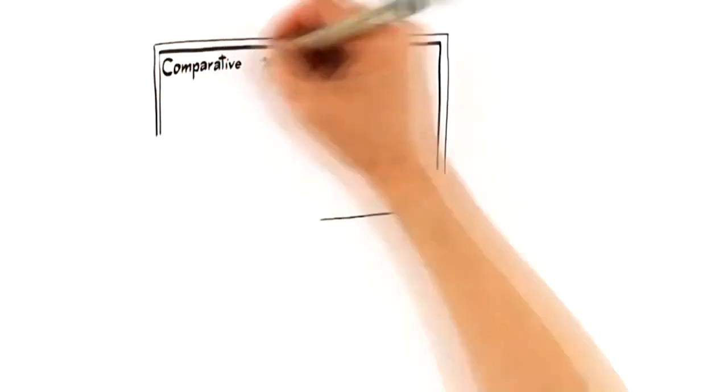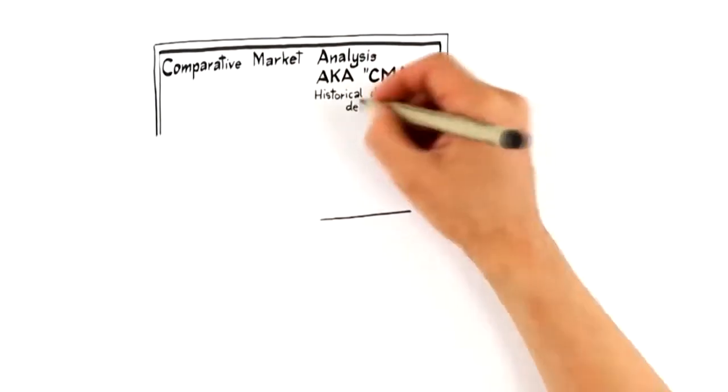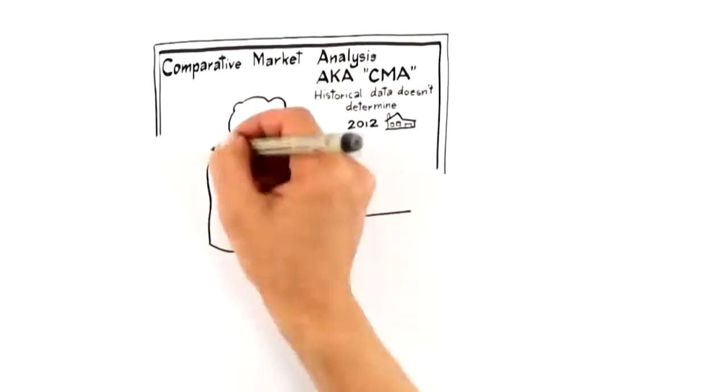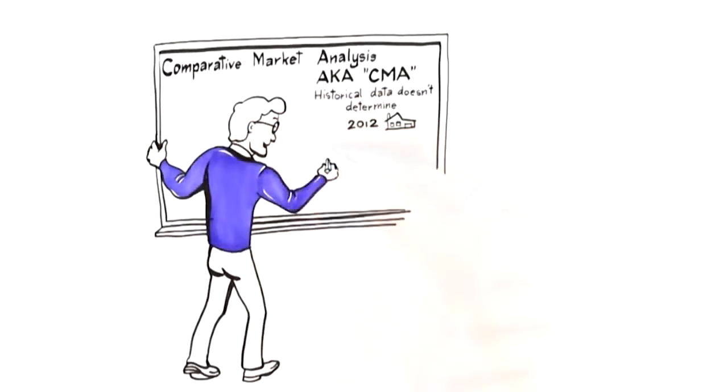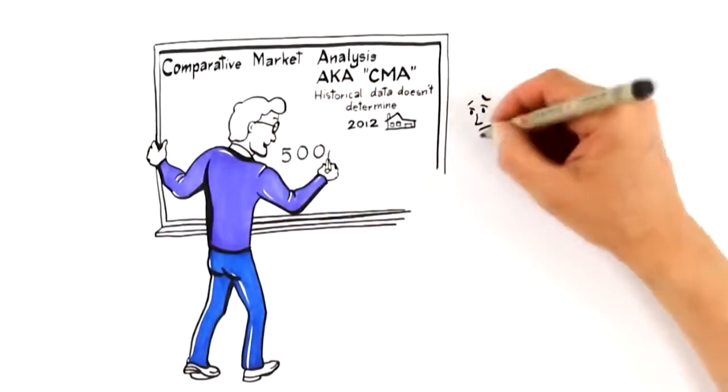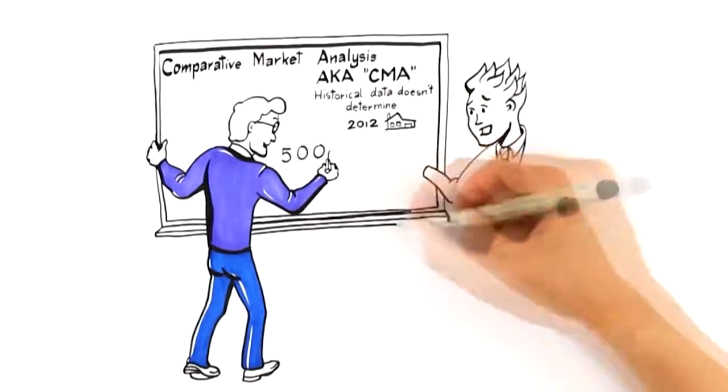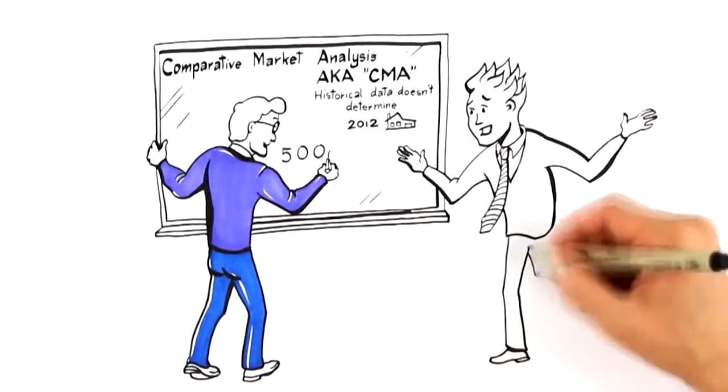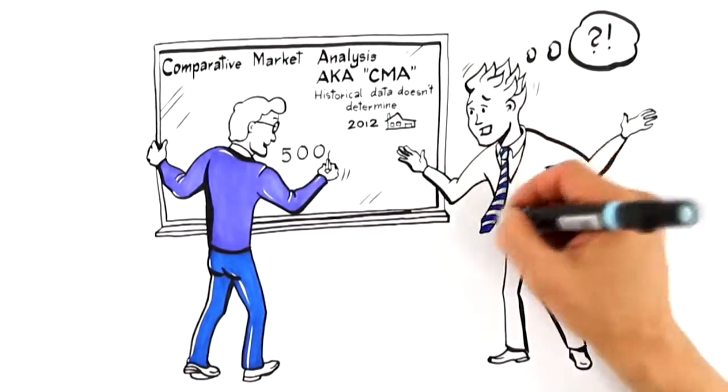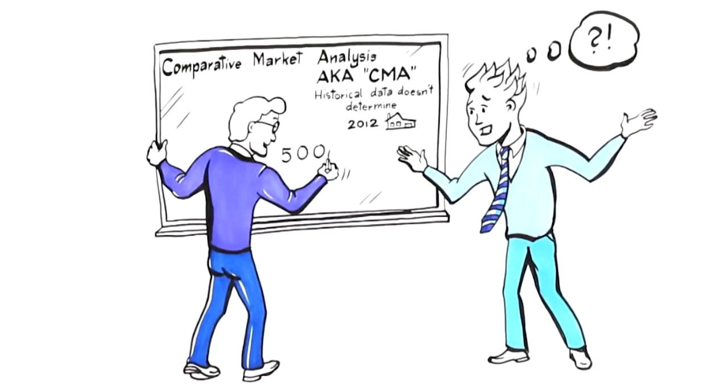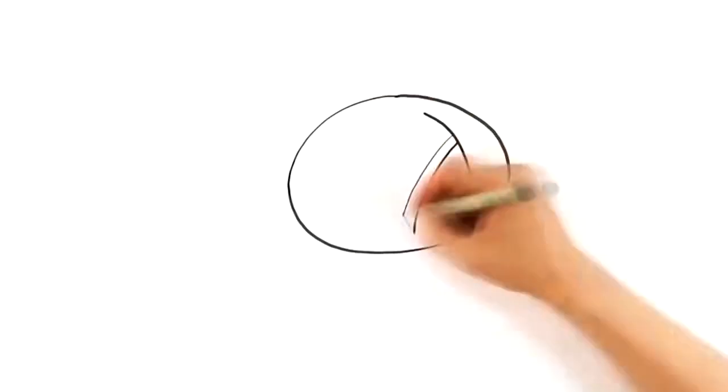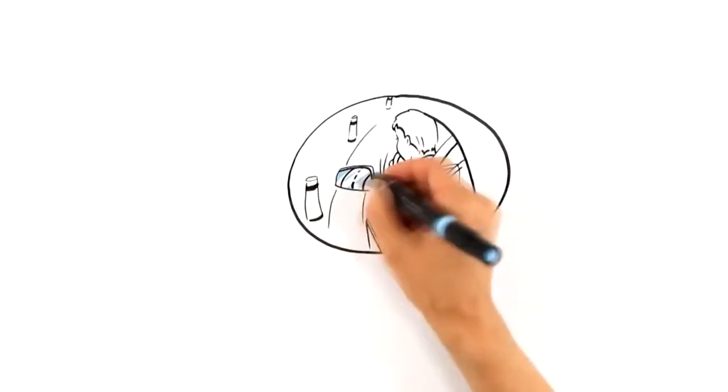Let's start with number one, pricing expertise. Traditionally, agents price homes using what is called a comparative market analysis, also known as a CMA. This establishes the value of your home by comparing it to historical sales. What most agents don't realize is that historical data doesn't determine how you should position your home in today's market to attract the highest offer. This would be like driving your car while looking in the rearview mirror.